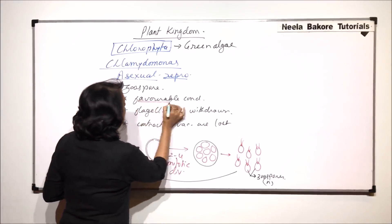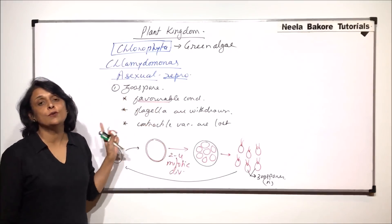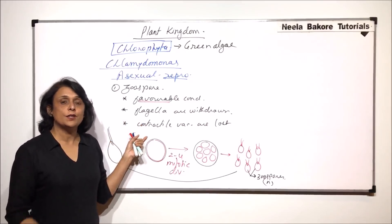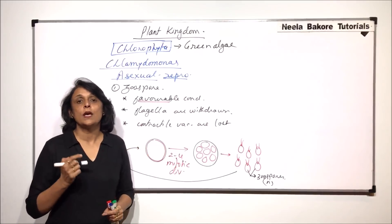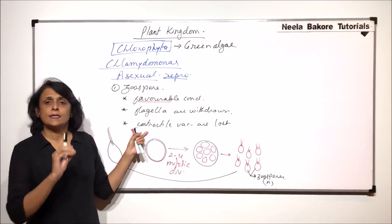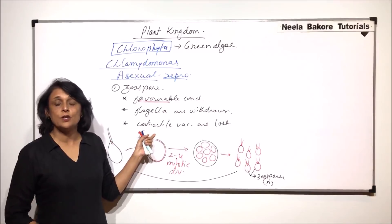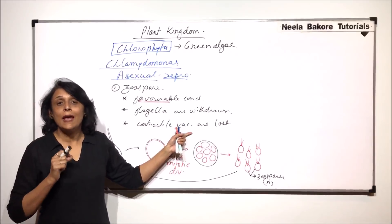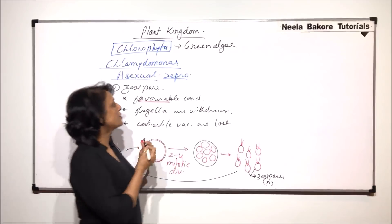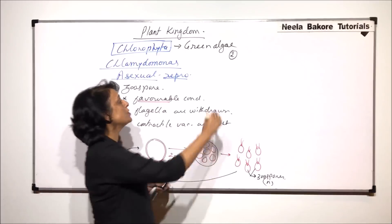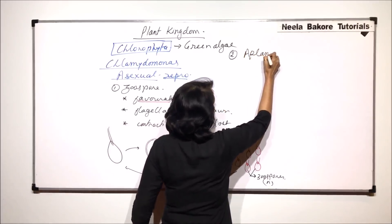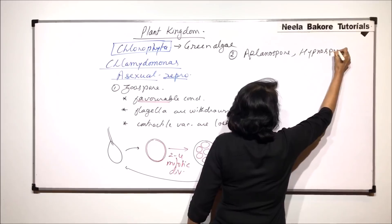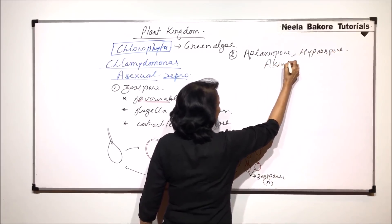Zoospores are produced only during favorable conditions. In unfavorable conditions, the structures which are formed are called aplanospores, hypnospores, or akinetes. There is a slight difference between these three structures. They help in two things: they would help in reproduction as well as help in surviving during those adverse conditions. So here we are talking about three types of spores — aplanospore formation, hypnospore formation, and akinete formation.